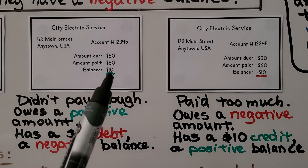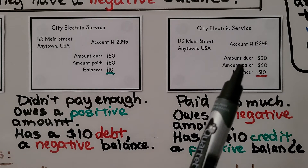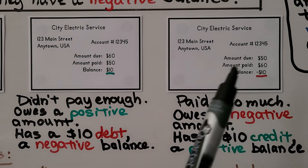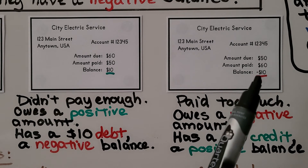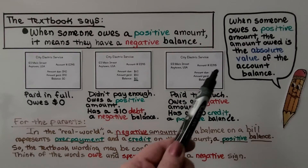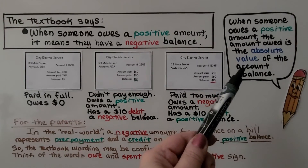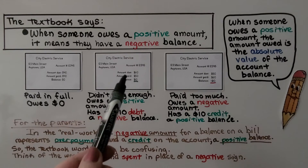Now look at the third bill: the amount due was $50 but they paid $60. They paid $10 too much, so their balance is negative $10. They owe a negative amount — they have a $10 credit, which is a positive balance. When someone owes a positive amount, the amount owed is the absolute value of the account balance.